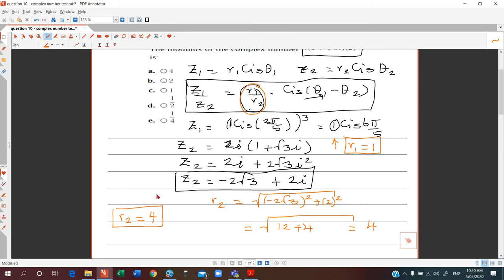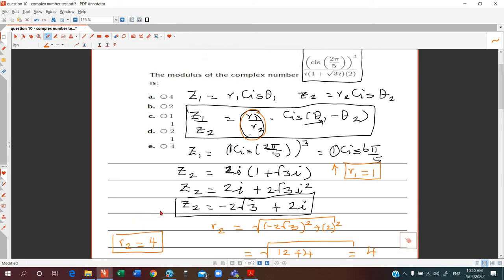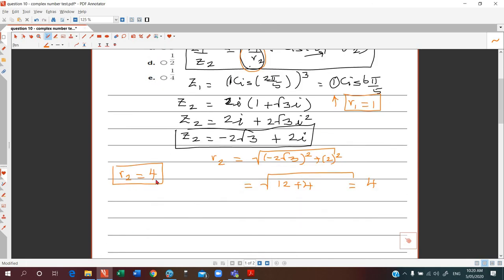Our question is what is the modulus of this complex number? The modulus of that complex number would be r1 on r2, which is going to be 1 on 4. And that is option e.